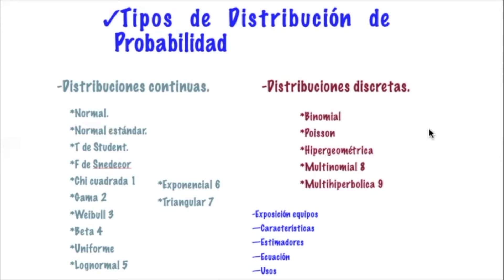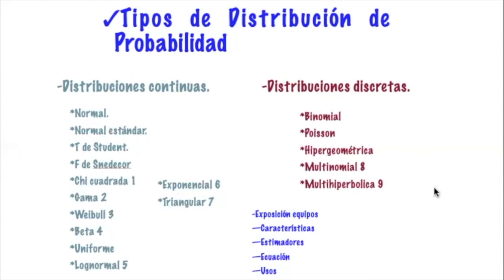Las distribuciones discretas, a diferencia de las continuas que pueden tomar datos tendientes hacia infinito, están limitadas a cierto número de variables. Las discretas implican valores como cero si no se presenta la característica y uno si se presenta, o valores del uno al cinco o del uno al seis como en un dado. Son características muy establecidas y limitadas en el número de categorías o valores que pueden tomar.